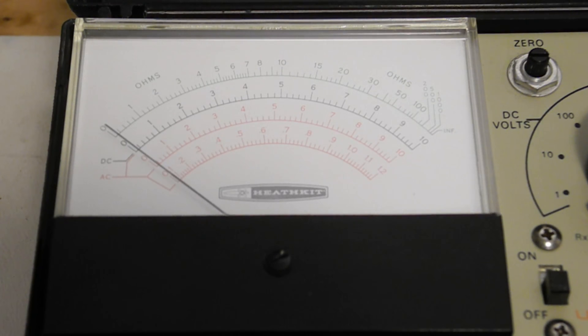Note that the two lowest AC ranges 1.2 and 10 are marked in red on the range switch to indicate that you need to read from the red scales on the meter. The different scales are needed due to the rectifier circuit in the meter not being linear at low voltages.